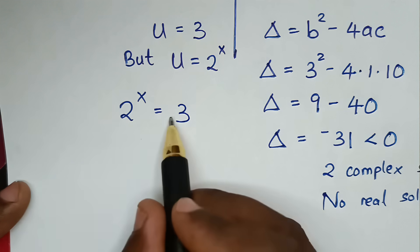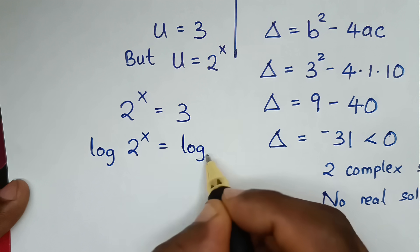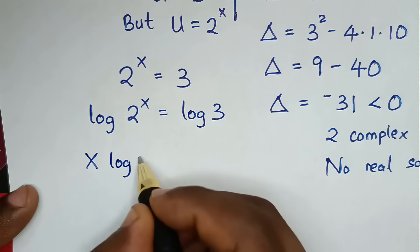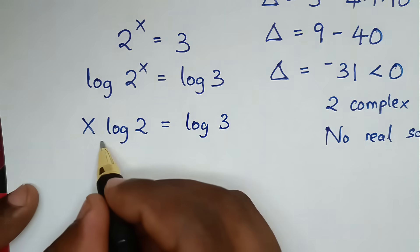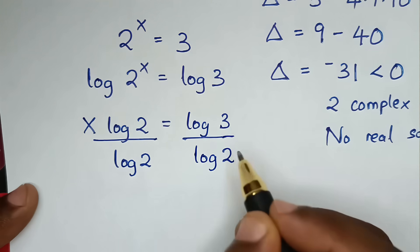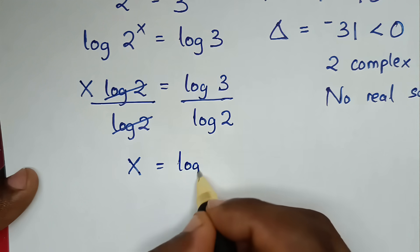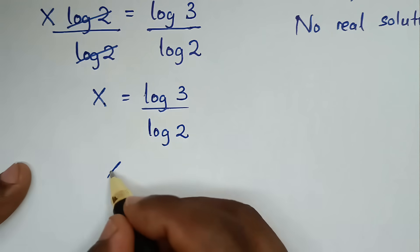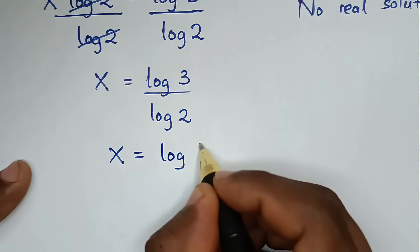We apply log to both sides: log(2^x) = log(3). The power x moves to the front: x·log(2) = log(3). Dividing both sides by log(2): x = log(3)/log(2), which is the same as log base 2 of 3. This is the final answer.